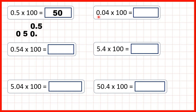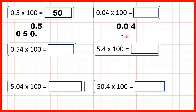Next we have 0.04 times 100. So we write the number out and copy down the decimal point. We're multiplying by 100 so the digits are moving two squares to the left. That's because in the number 100 we have two zeros, but also because when we multiply by 100 we can think of that as multiplying by 10 and then by 10 again, and we know that when we have 10 of something, digits move to the place value to the left.